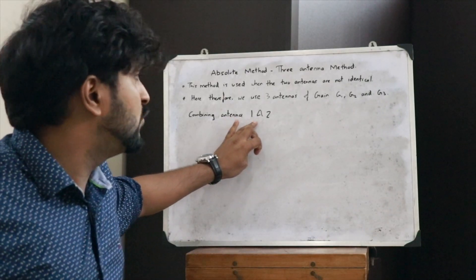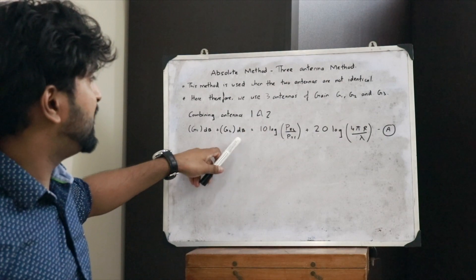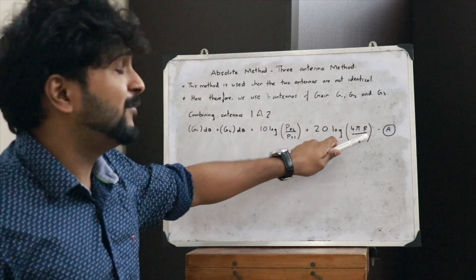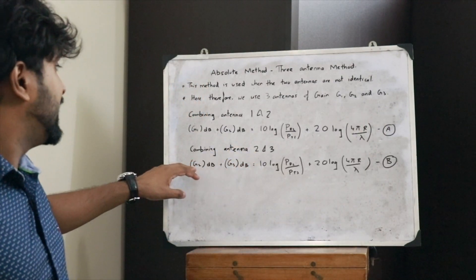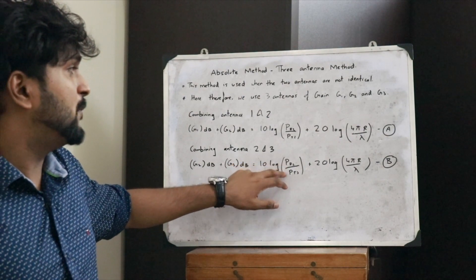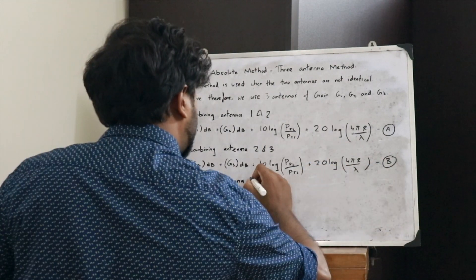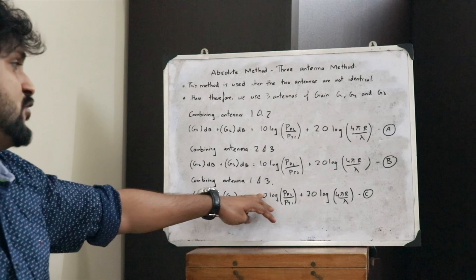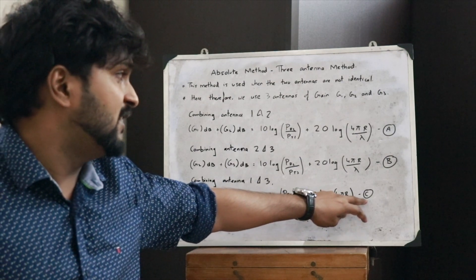Combining antennas 1 and 2 using the Friis equation: G1(dB) + G2(dB) = 10 log(Pr2/Pt1) + 20 log(4πr/λ) — call this equation A. Combining antennas 2 and 3: G2(dB) + G3(dB) = 10 log(Pr2/Pt3) + 20 log(4πr/λ) — call this equation B. Combining antennas 1 and 3: G1(dB) + G3(dB) = 10 log(Pr3/Pt1) + 20 log(4πr/λ) — call this equation C.